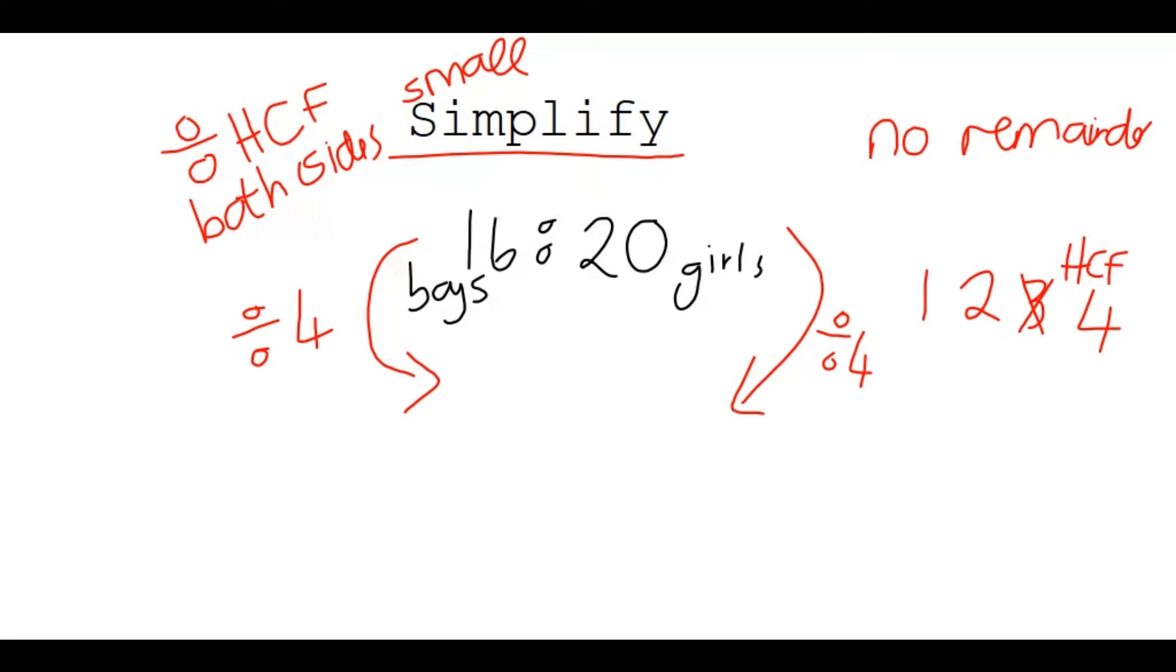And 16 divided by 4 is 4. 20 divided by 4 is 5. Now I always check whether I still need to simplify this new ratio to get a smaller one but I see that there's nothing that can divide into 4 and 5. So they have no common factors. And 4 to 5 is then our simplest form.